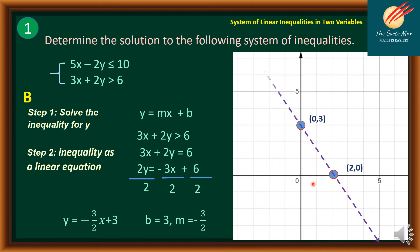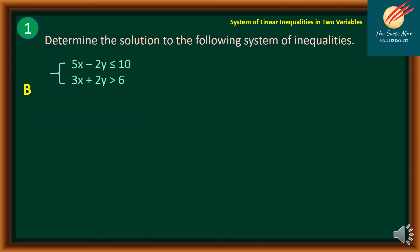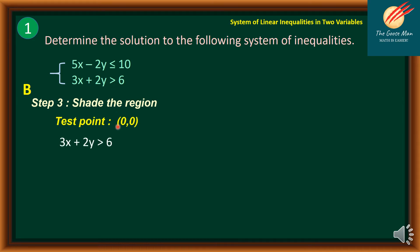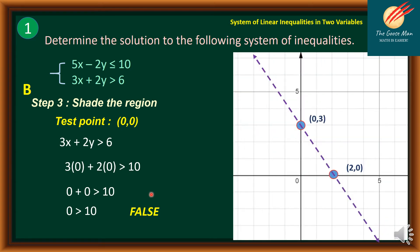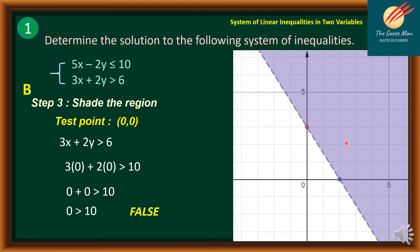For the shading step, we test point (0, 0) in 3x + 2y > 6: substituting gives 3(0) + 2(0) = 0. Is 0 greater than 6? No — this is a false statement. Therefore, (0, 0) is not included in the shaded region, so we shade the opposite side of the line.